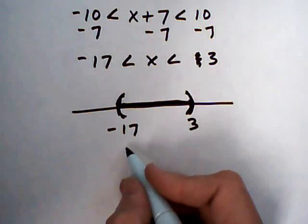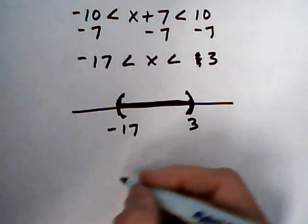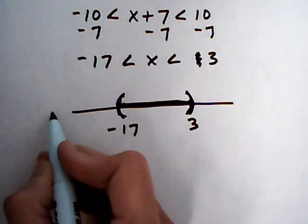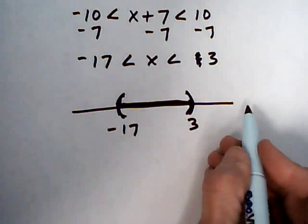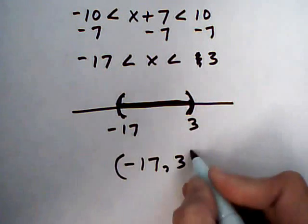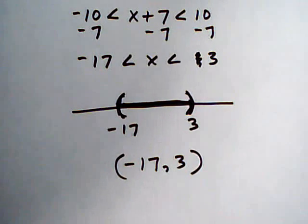Interval notation, again, go right from what you see on the graph. We only have two endpoints here, minus 17 and 3. We're not going to infinity on either direction. So we're going to put down the endpoints that we see with parentheses, and that's our final answer.